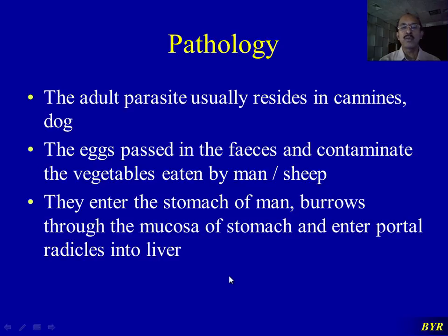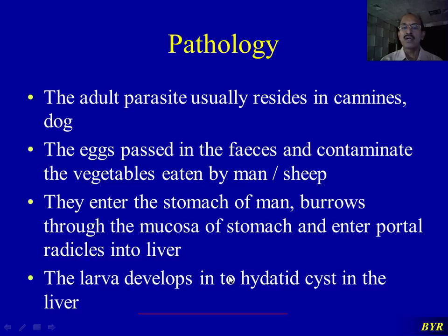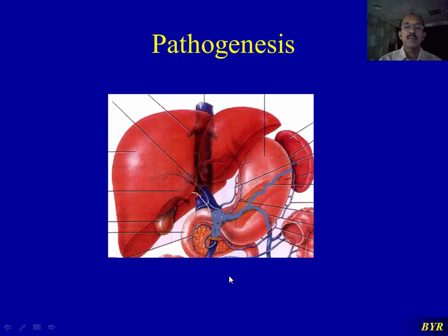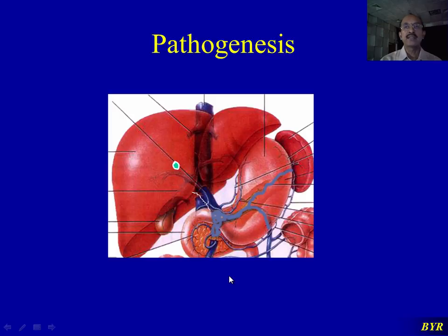The eggs enter the stomach, burrow through the mucosa, and enter the portal circulation into the liver, where the larva develops into hydatid cysts. In the intestinal tract, hydrochloric acid and other intestinal juices dissolve the outer coat of the egg, and the embryo passes into the liver through the portal vein. The liver sinusoids, rich in nutrients and metabolites, are the most favorable place for the parasite to settle.